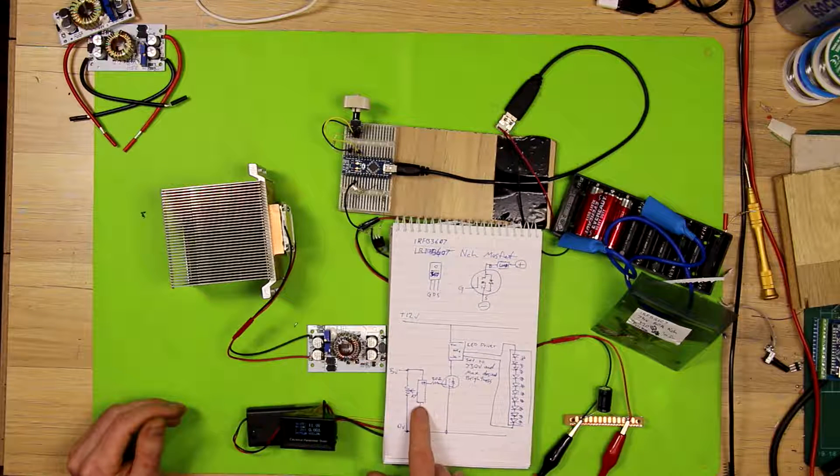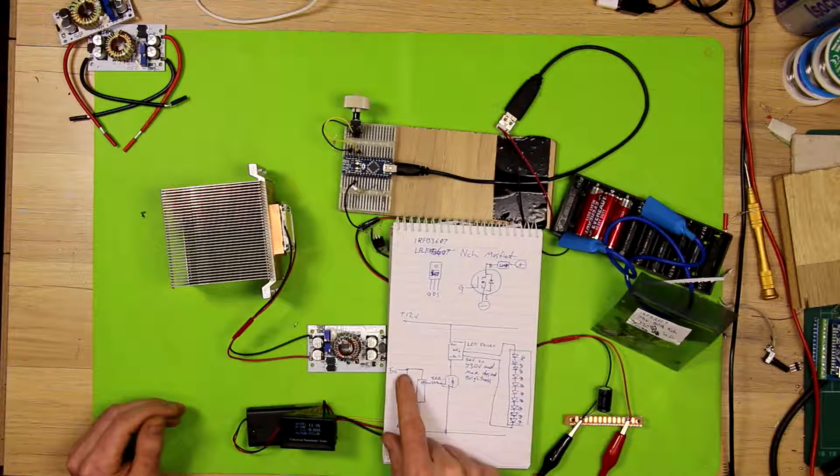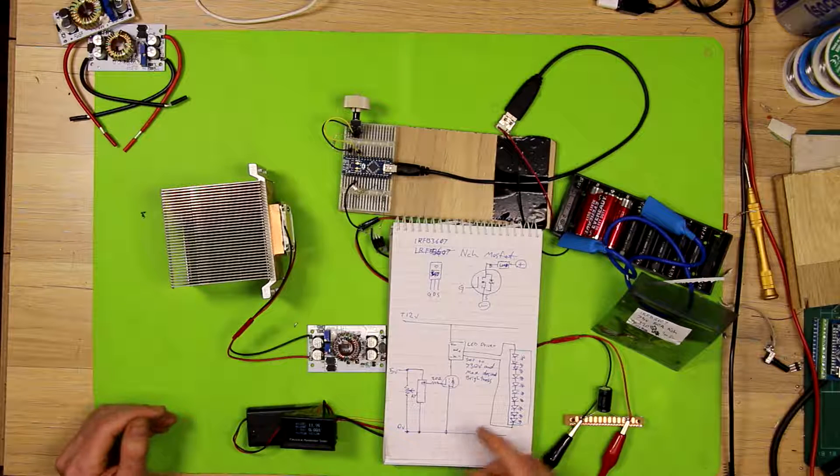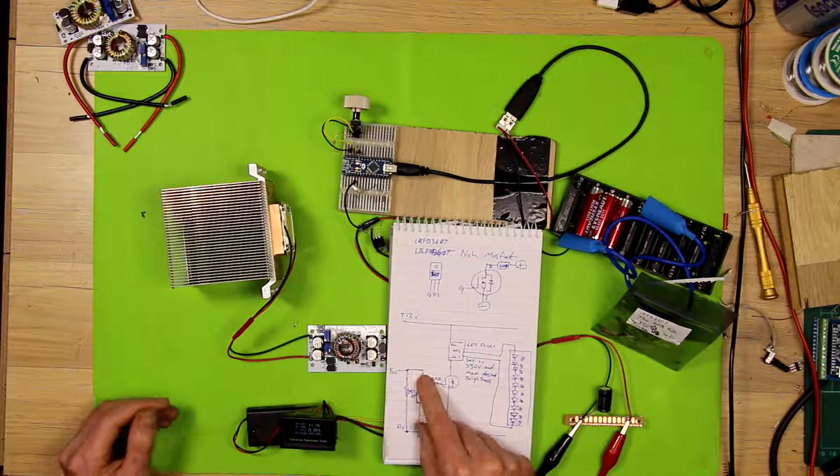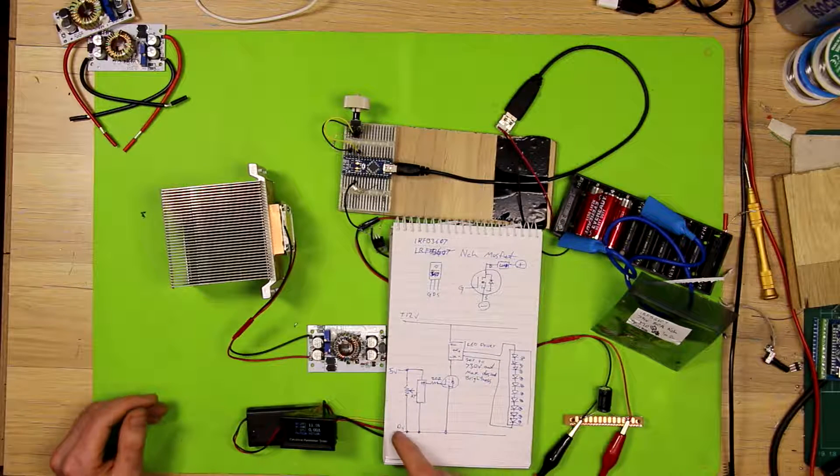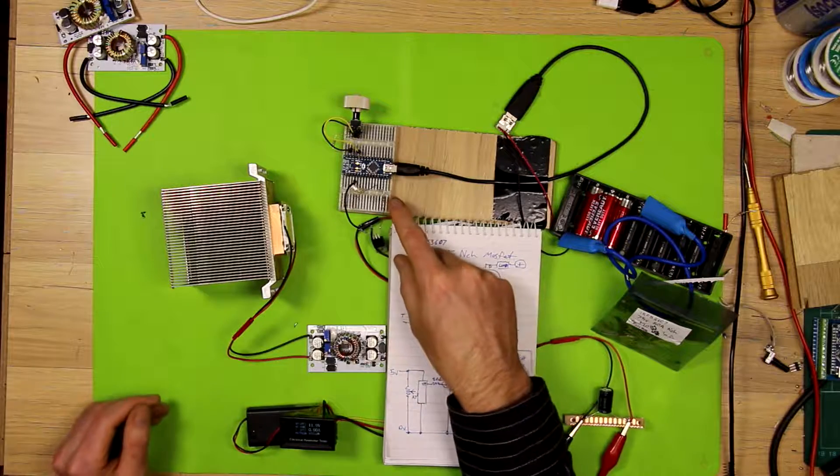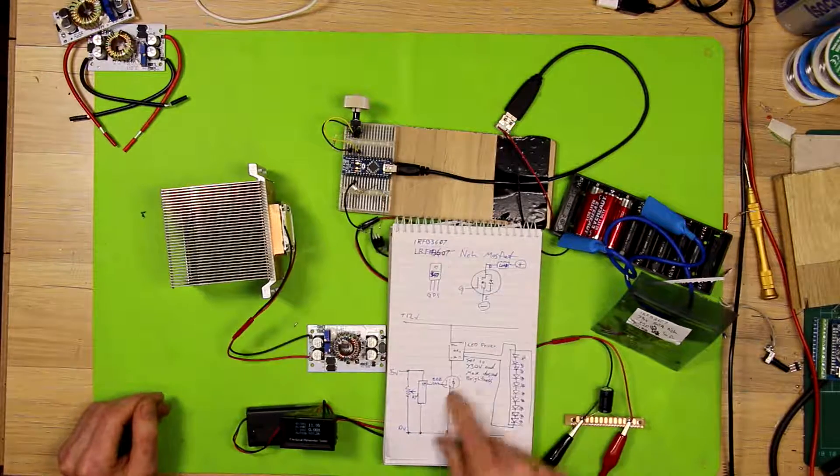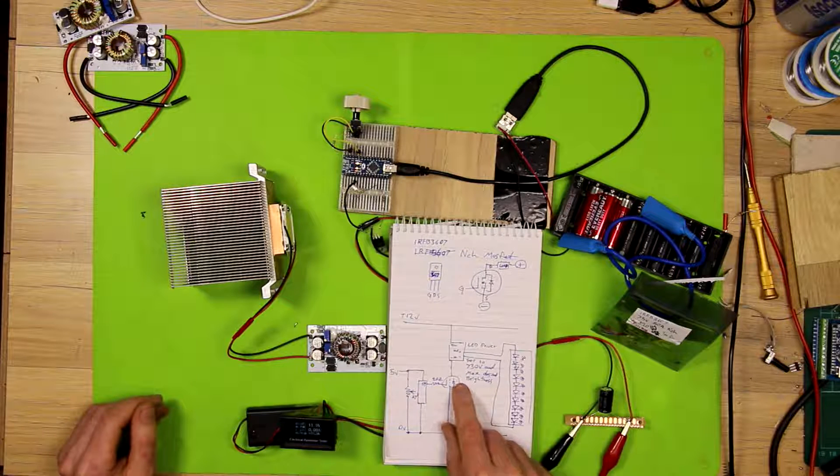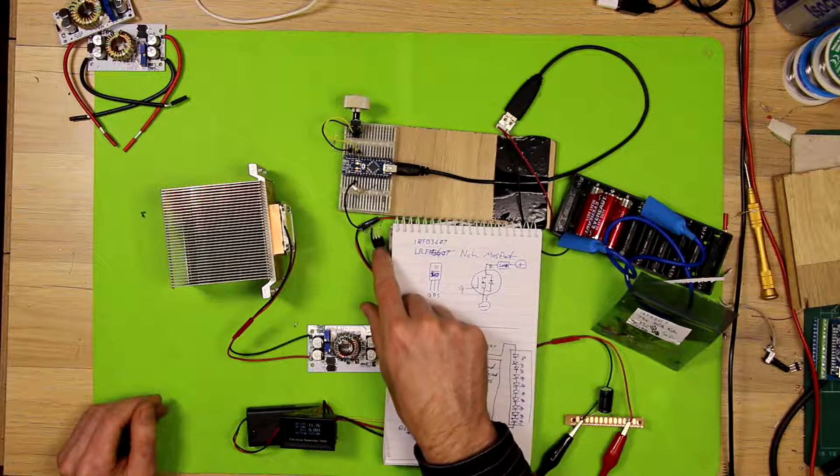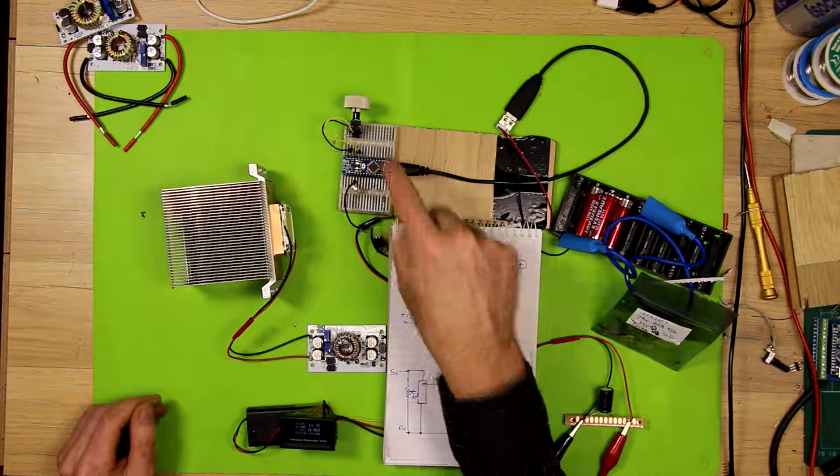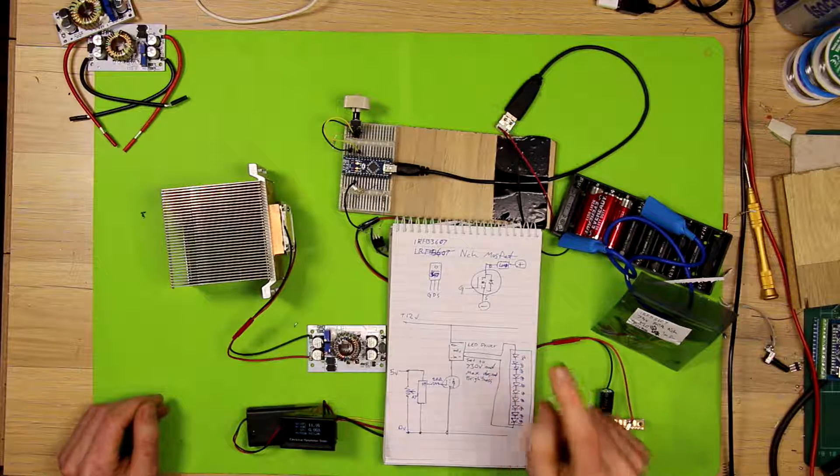So with the LED turned up to four and a half amps there, it's jumping around because it's not a constant current anymore it's drawing pulses but it's jumping around 50 watts. So I'd say there's probably a couple of watts being lost in that mosfet.